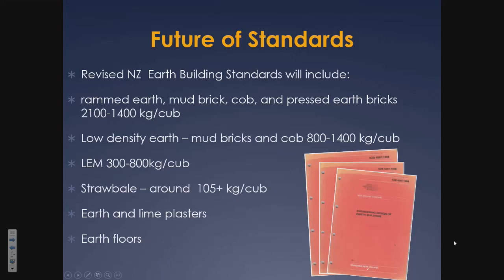The future of standards: ARENA is already revising them. With a nod from the government, we're going to increase our range of materials hugely. The earth building standards are going to cover rammed earth, mud brick, cob, pressed bricks, low-density earth that Verena has been telling you about, light earth which is a straw-clay mix, straw bale, and earthen and lime plasters and earth floors. One document will have the whole range of natural building materials that have some relationship to clay — I claim straw bale because we stick earth renders on them.